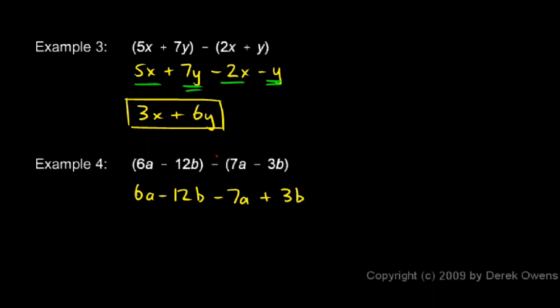Once again, you can think of this as this negative sign being distributed across these two terms. That negative applies to the 7a, so we end up with a negative 7a. And the negative applies to the negative 3b. So a negative negative 3b is a positive 3b.